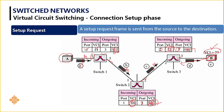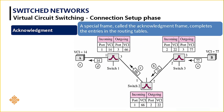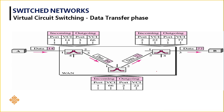Once the setup is complete, the forwarding tables are updated with outgoing VCIs for all switches. An acknowledgement comes back using VCIs 77, 22, and 66. Once the setup is completed, the real data is transferred using this routing table — the data is transferred with VCIs 66, 22, and 77 along the path.